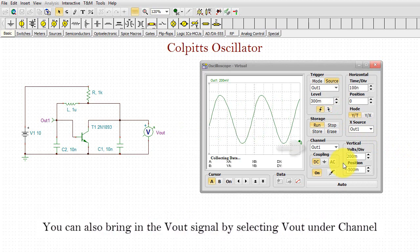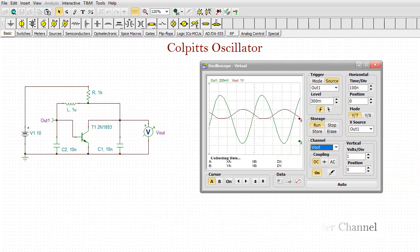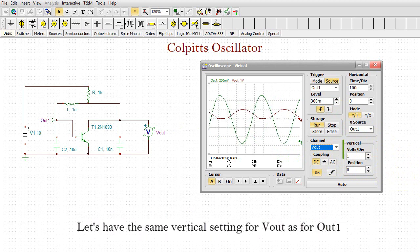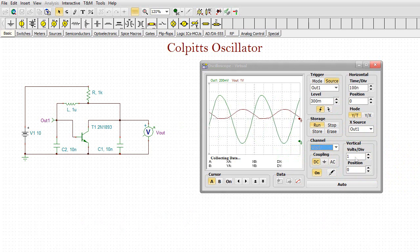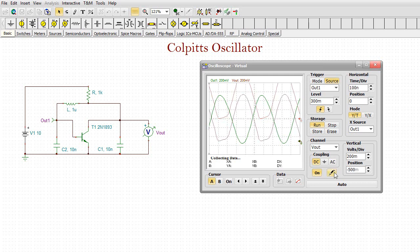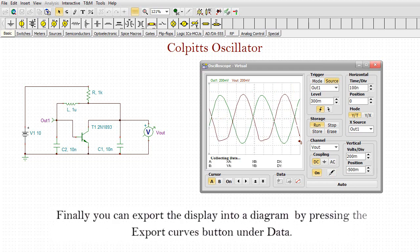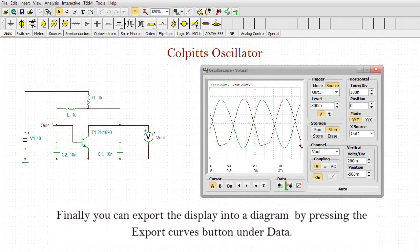You can also bring in the VOUT signal by selecting VOUT under Channel. Finally, you can export the display into a diagram by pressing the Export Curves button under Data.